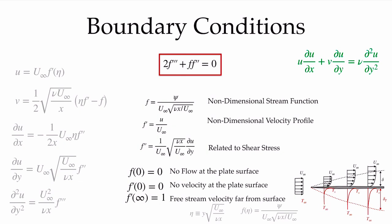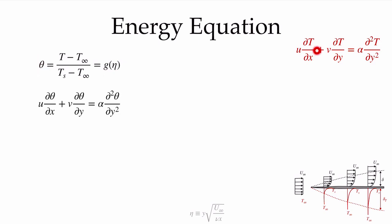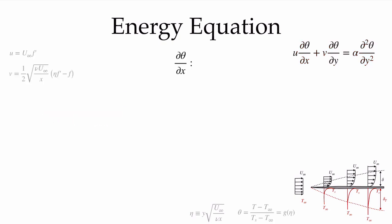We'd also like to obtain the temperature profiles, so we go through the same process with the energy equation — the final partial differential equation. We define a non-dimensional temperature theta as (T - T_infinity) / (T_s - T_infinity), calling it g — a function of eta. We want to collapse all temperature profiles onto a single curve using the same similarity parameter eta, converting the energy equation into an ODE. Substituting the theta definition into the governing equation gives us the non-dimensional form.